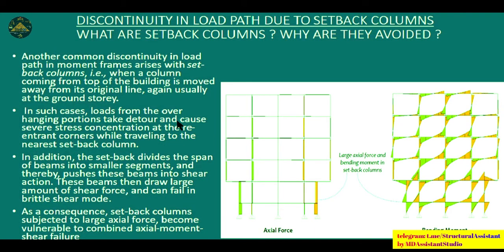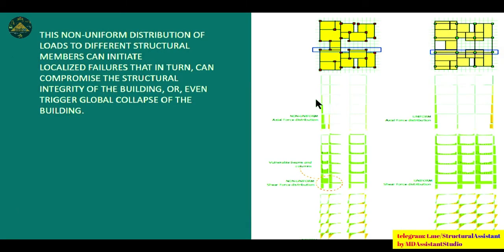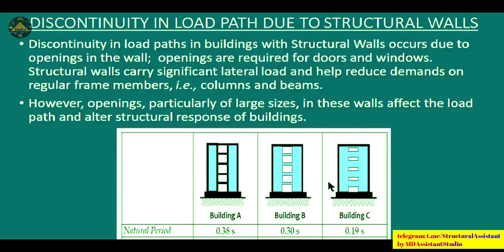Another source of discontinuity is improper column grid arrangements. An ideal arrangement has all columns aligned in a single line. Non-uniform grid arrangements cause non-uniform force distribution — some areas experience axial forces in compression, some in tension, and large shear forces concentrate at certain points. Such arrangements are not desirable under earthquake loading.